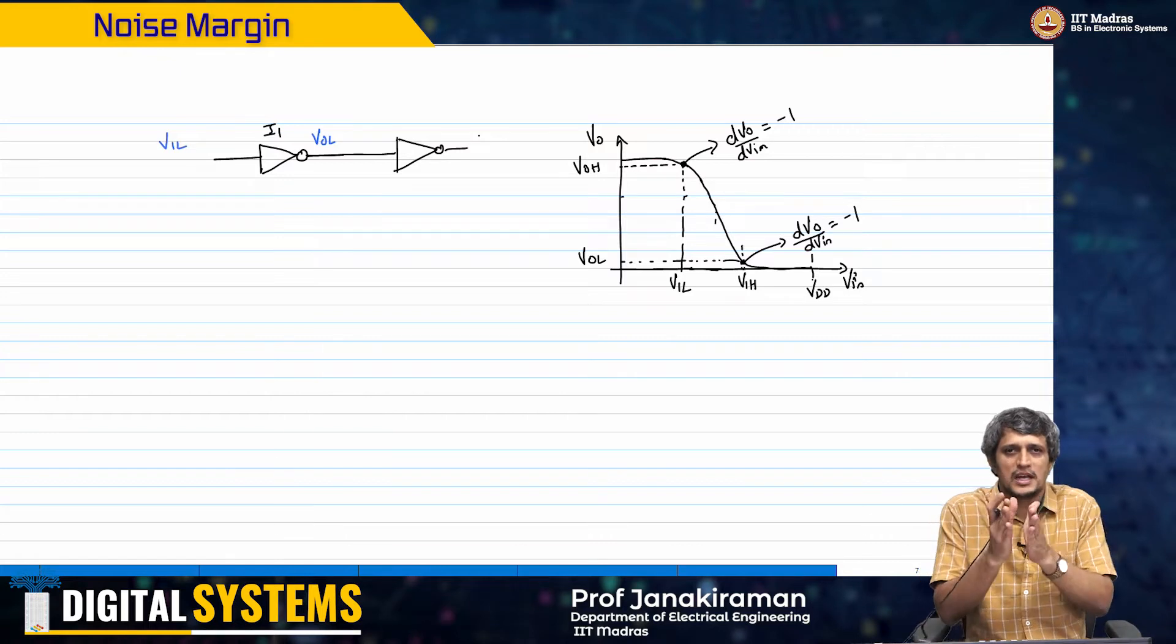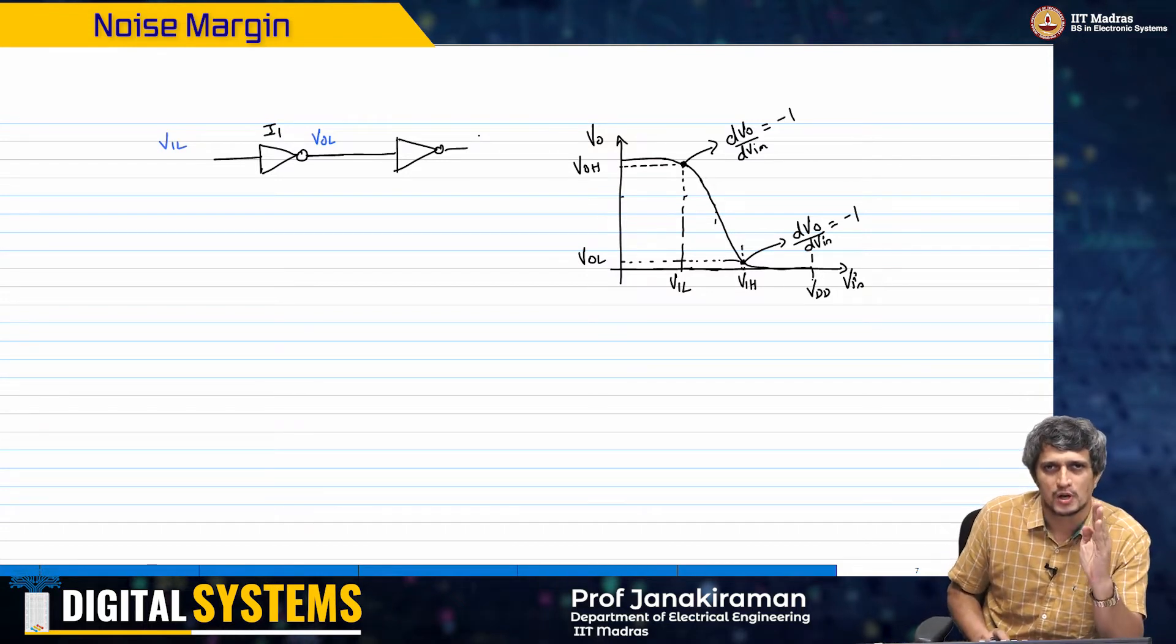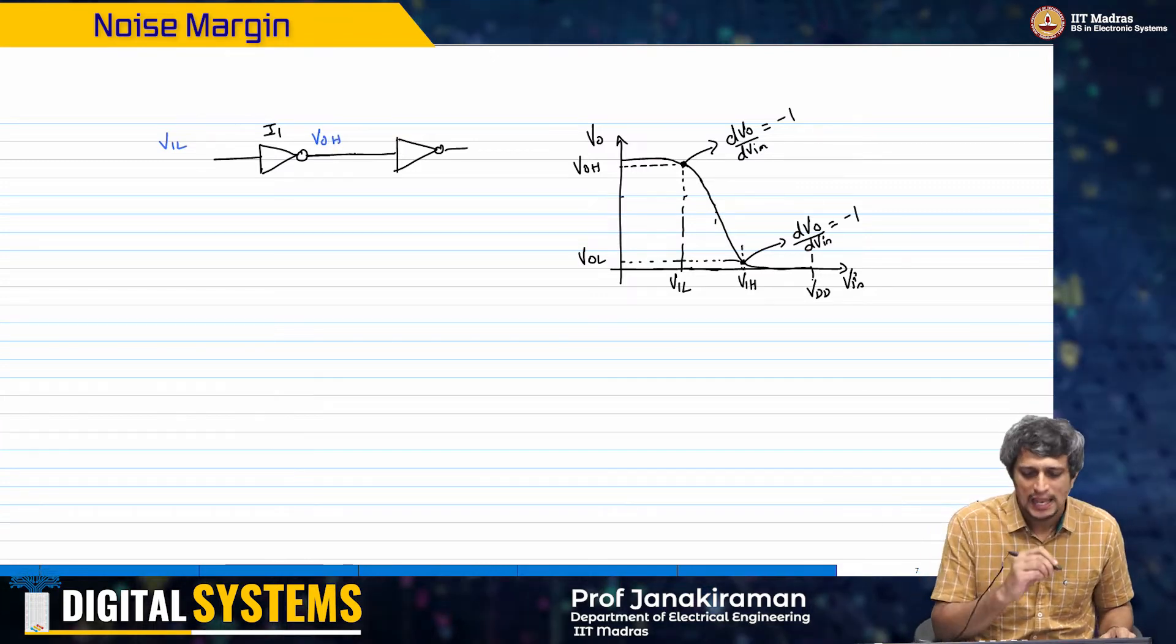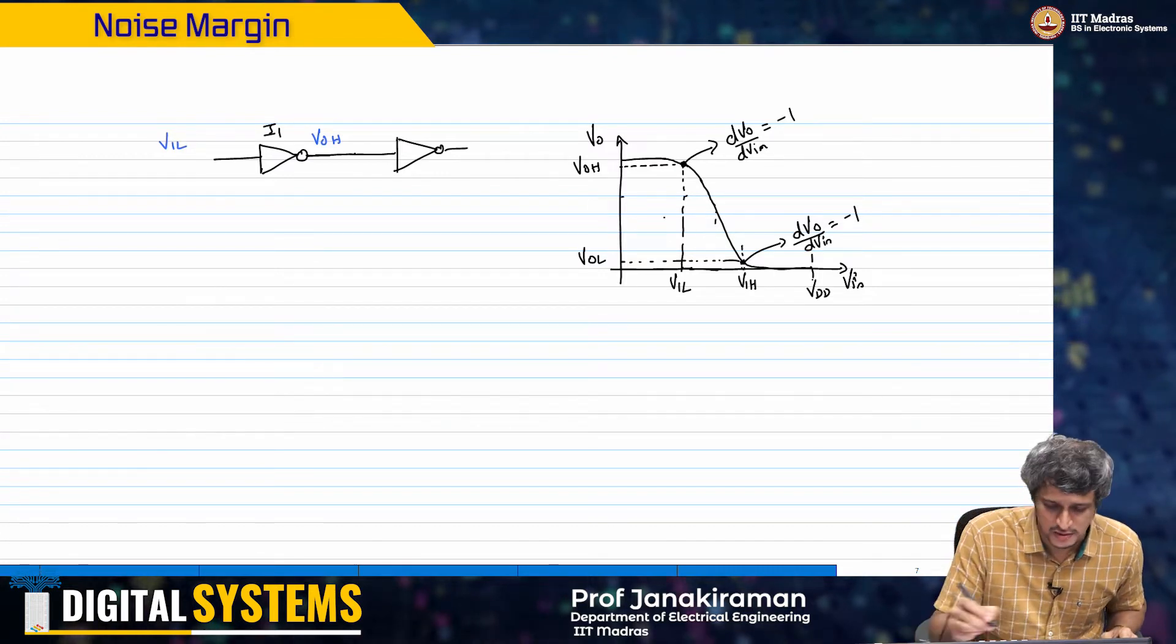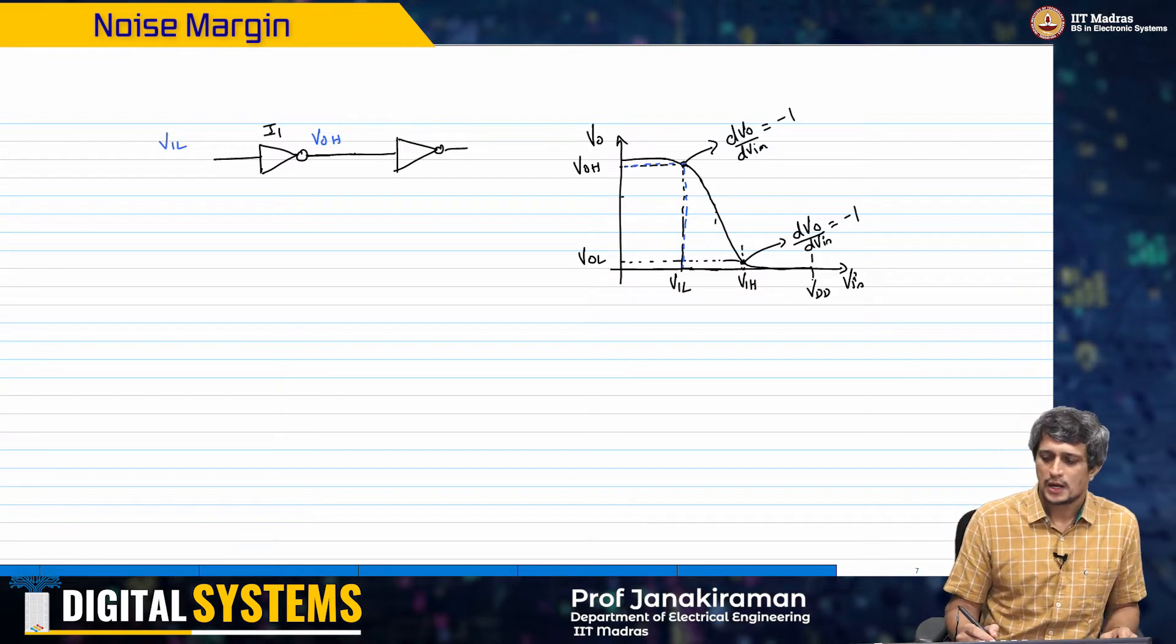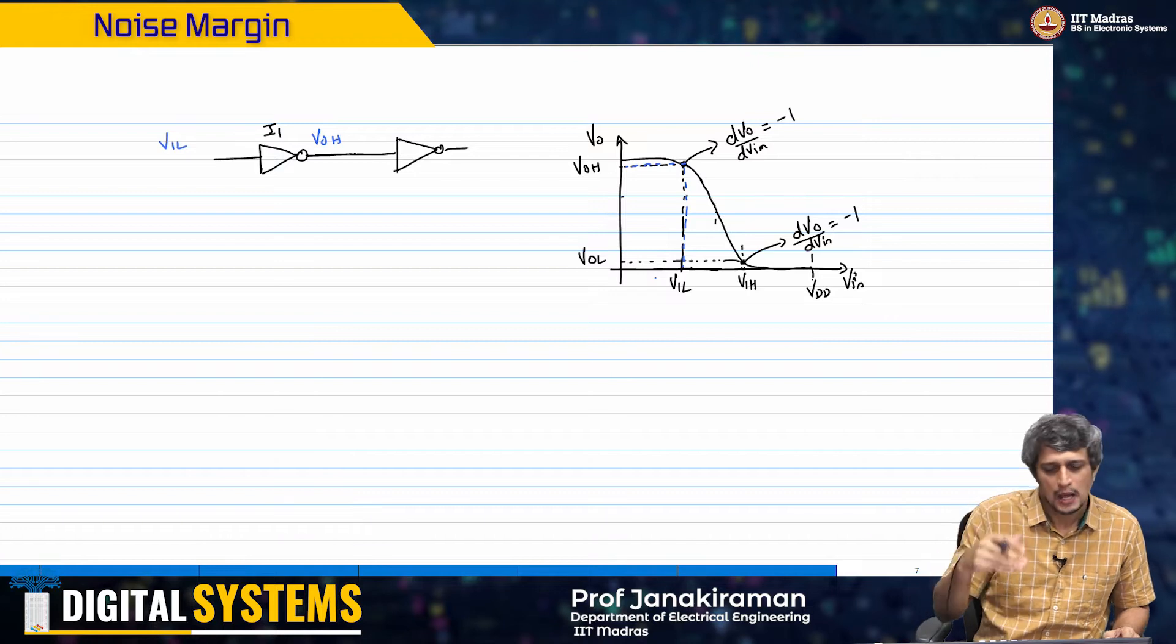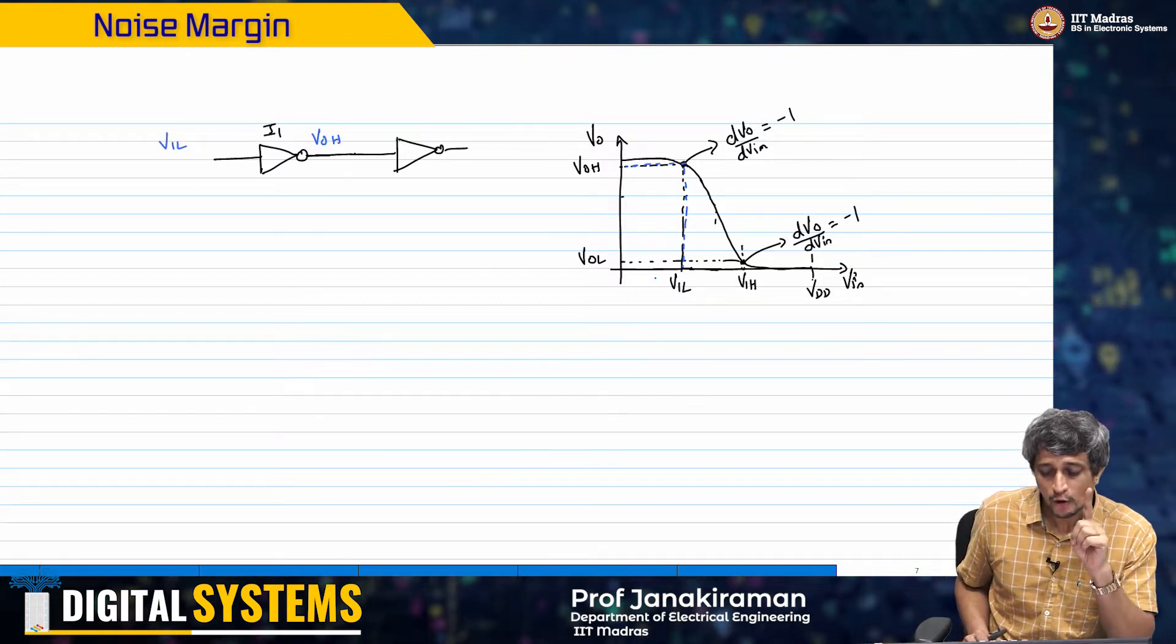What will be the output of I1 from this voltage transfer characteristic? The output should be VOH of I1. Now VIL is the limit of your logic low. If I give VIL to inverter I1, I will get the output as VOH as shown in this curve.